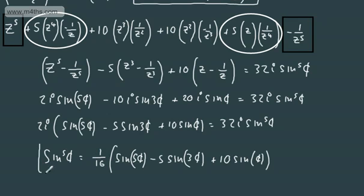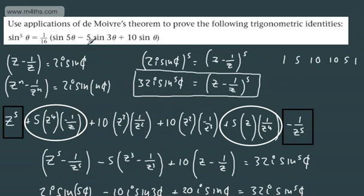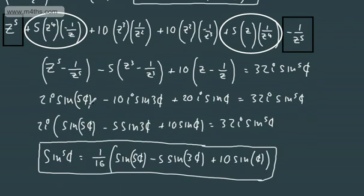You can see that doing it with sine versus cosine — the cosine is slightly easier — but hopefully that gives you a good insight on how you can do this. We've used applications of De Moivre's theorem to prove yet another trig identity. Sometimes you'll be asked to integrate as a result, and it really is quite straightforward once you have it in this form.